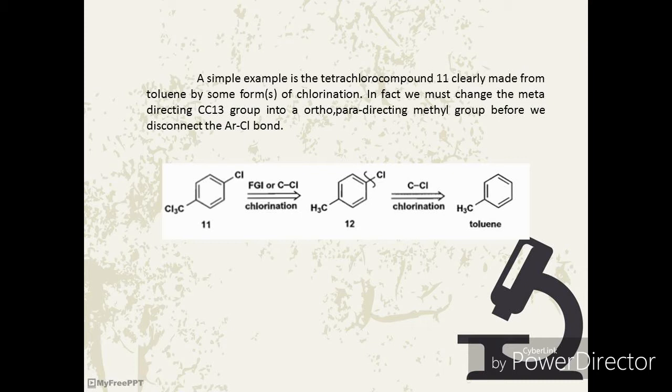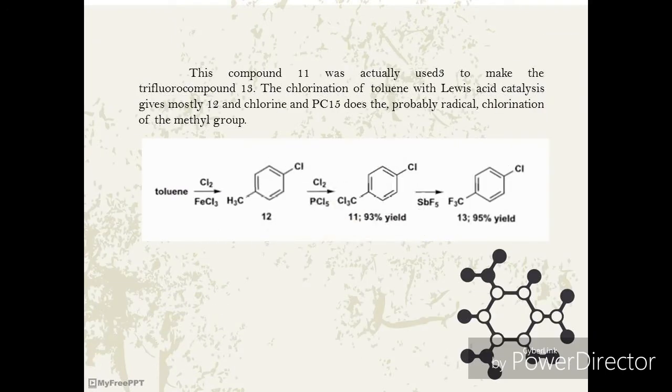In an analysis featuring FGI, it may pay to consider at which stage to carry out some other reactions. A simple example is the tetrachloro compound 11, clearly made from toluene by some form of chlorination. In fact, we must change the meta-directing CCl3 group into an ortho-para-directing methyl group before we disconnect the Ar-Cl bond. This compound 11 was actually used to make the trifluro compound 13. The chlorination of toluene with Lewis acid catalysis gives mostly 12, and chlorine and PCl5 does the, probably radical, chlorination.